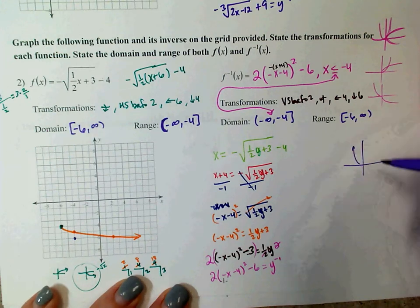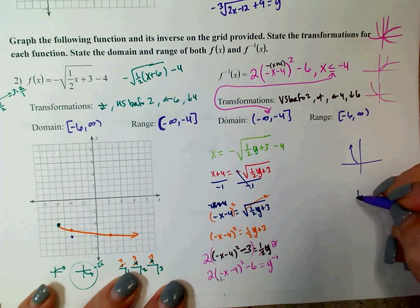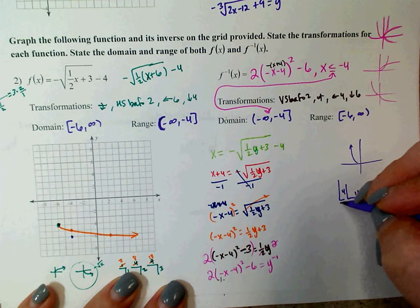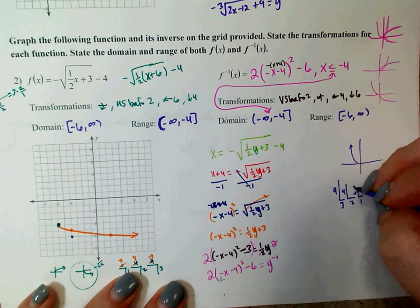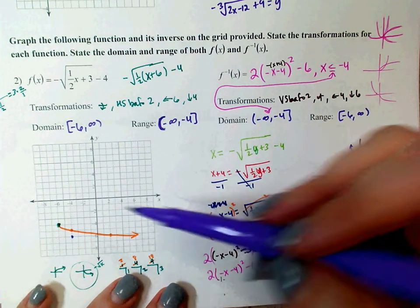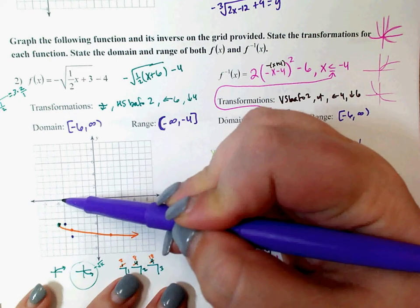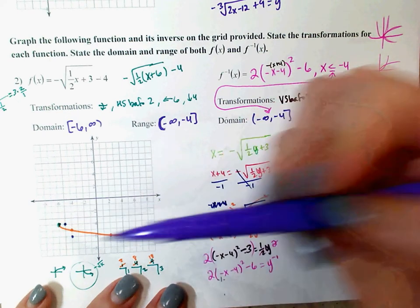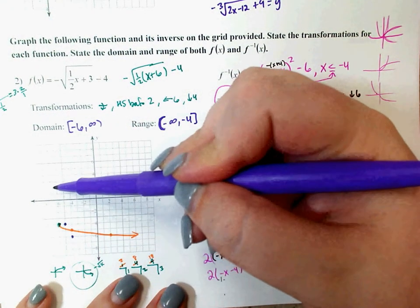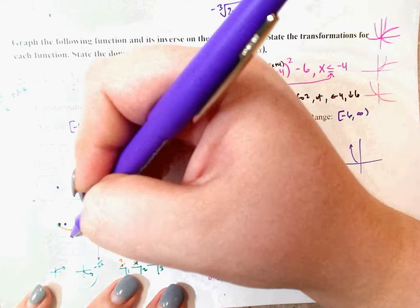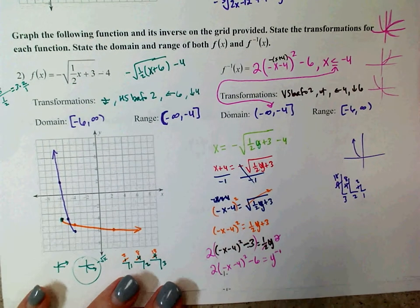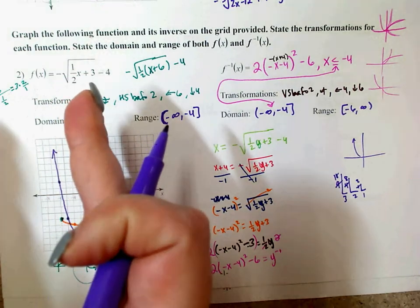It is a parabola, but only the left-hand side. So I go left and up, left and up. 1 squared is 1, 2 squared is 4, 3 squared is 9, but it's a vertical stretch — so the values become 2, 8, 18. From the starting point left 4 down 6: left 1 up 2 gives point (negative 5, negative 4), left 2 up 8 gives point (negative 6, 2). Drawing the half parabola, the domain is negative infinity up to negative 4, and the range is negative 6 to infinity.